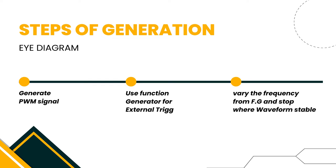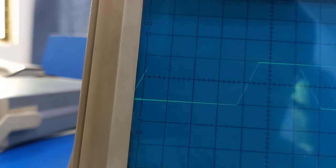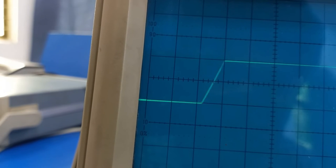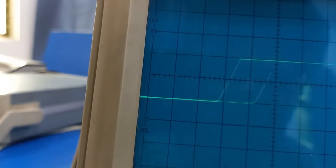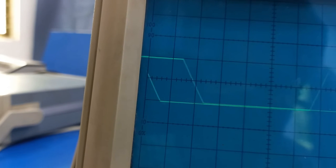After calibrating the oscilloscope, we can see that a clear PWM signal is obtained on the oscilloscope.